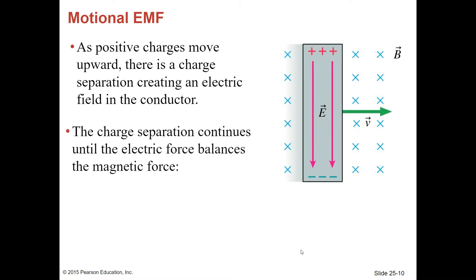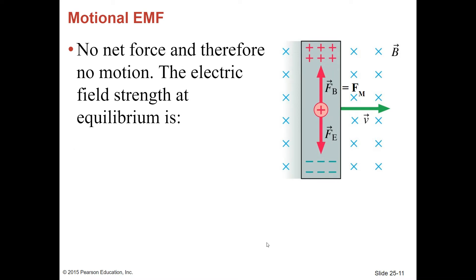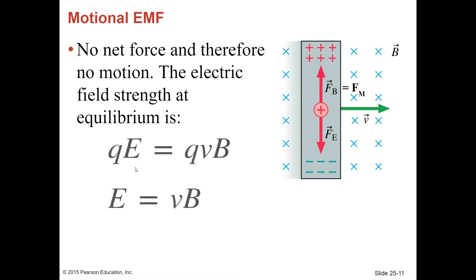The charge separation continues until the electric force balances the magnetic force. The electric force acts downward, in the same direction as the electric field, while the magnetic force acts upward. Setting them equal: the electric force is Q times E, and the magnetic force is QVB. The Q's cancel, so at equilibrium the electric field strength E equals V times B — the velocity multiplied by the magnetic field strength.